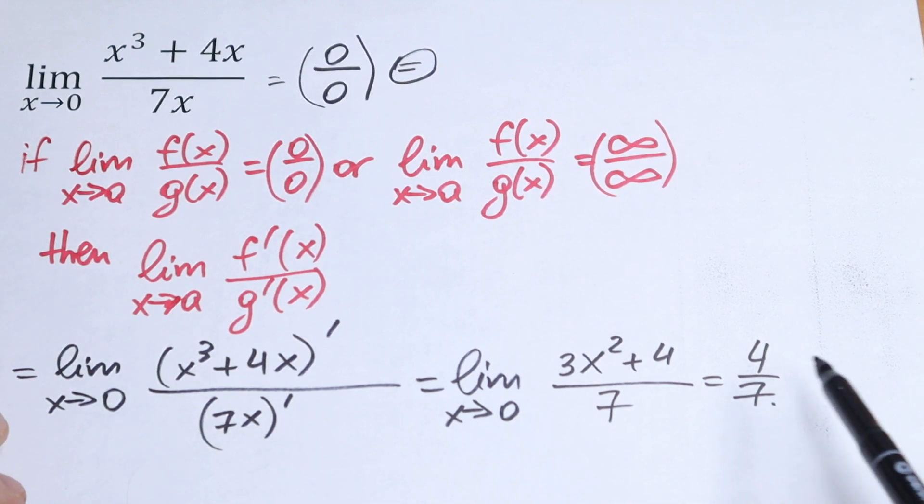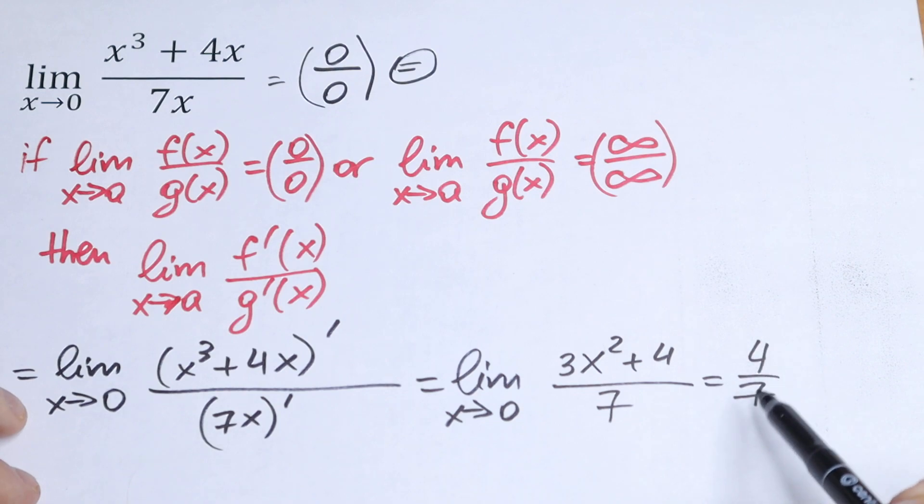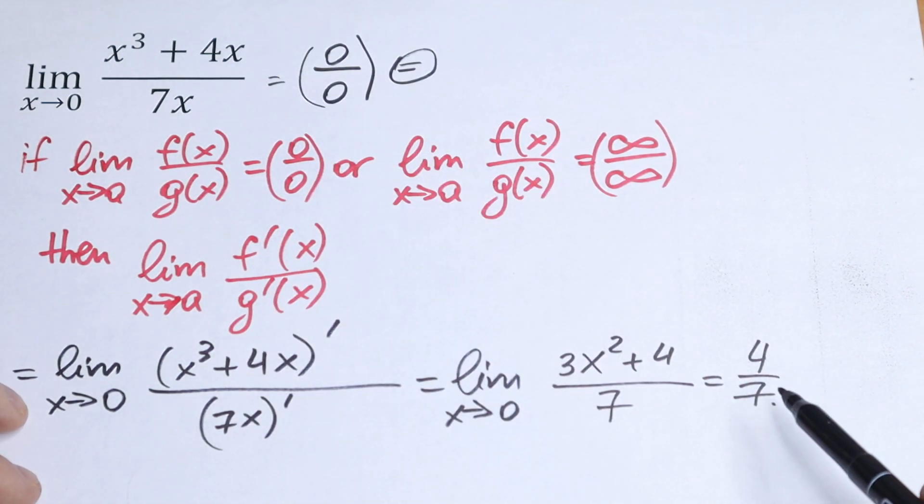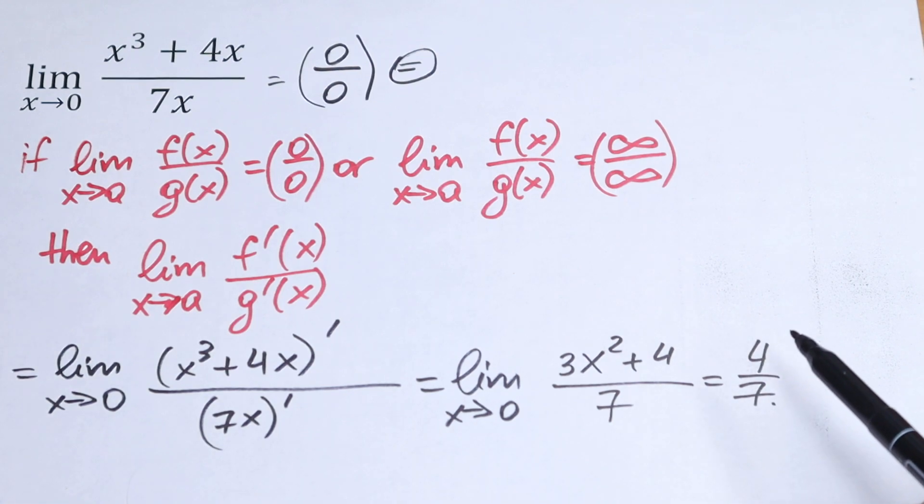And moreover, if you have 0 over 0 once more, you can apply this L'Hopital's rule once more, once more and once more. So this is a really good rule. Of course, we cannot use this rule for every function, but in our case this rule works well.